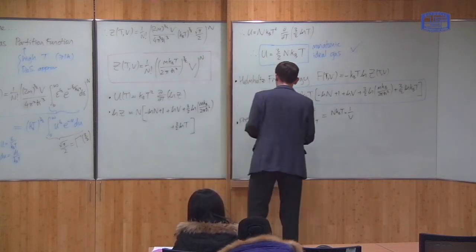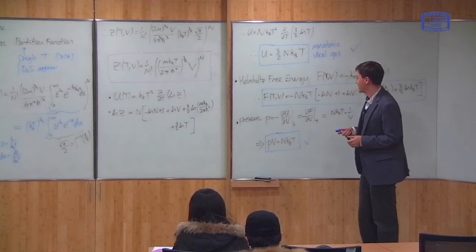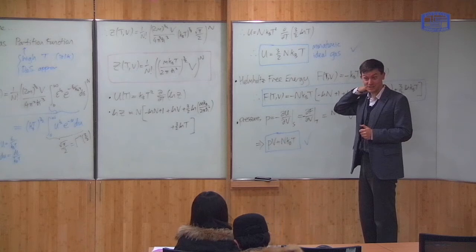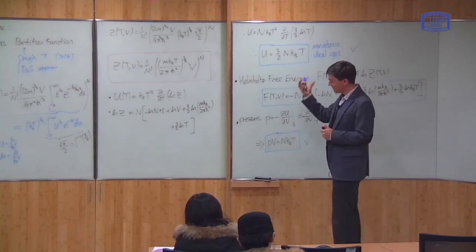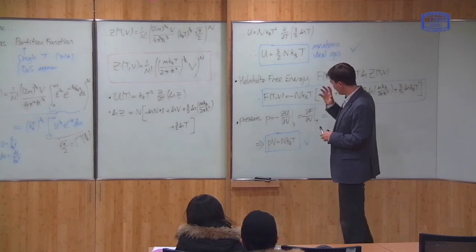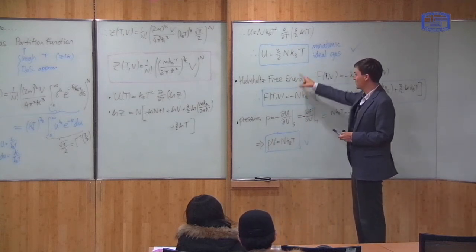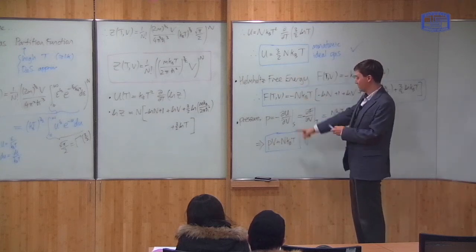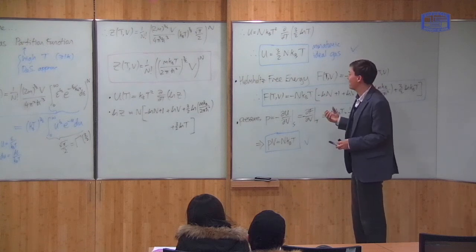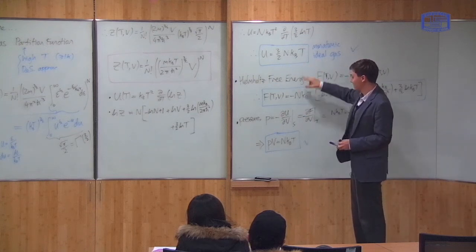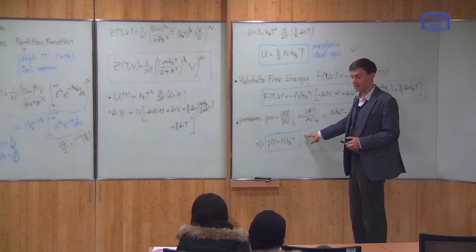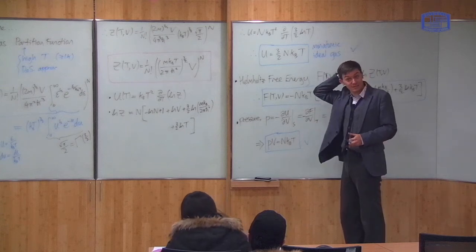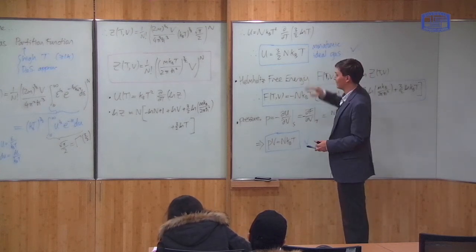After the break I'll calculate the entropy and then summarize the ideal gas derivation. What we've done is very important: at the beginning of this course I gave these two equations as empirical results, but now I've shown you can derive them theoretically from statistical mechanics — from the idea that entropy is related to the log of the number of microstates.